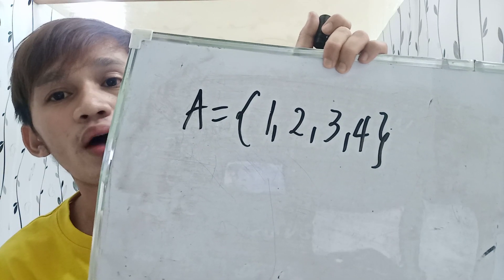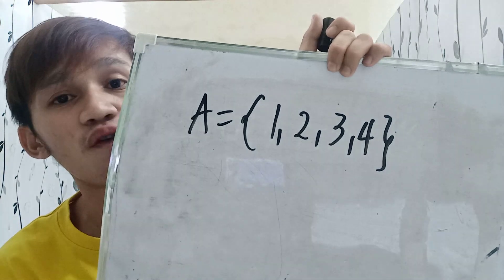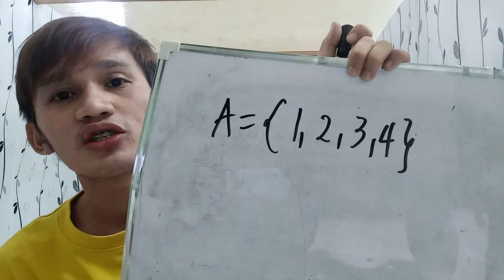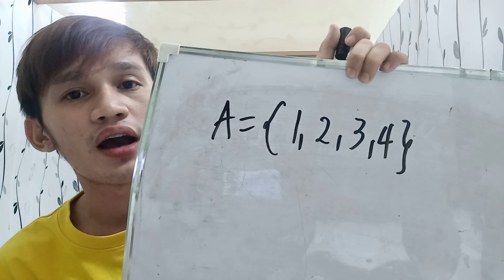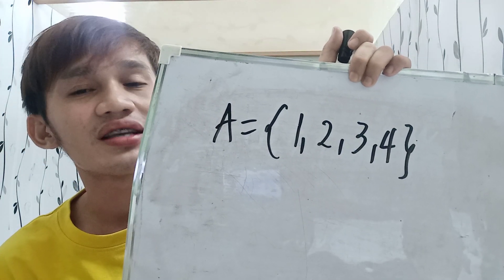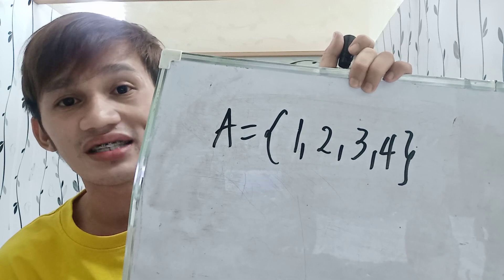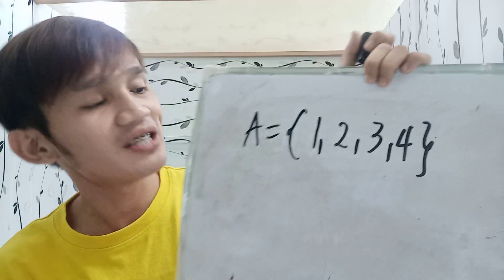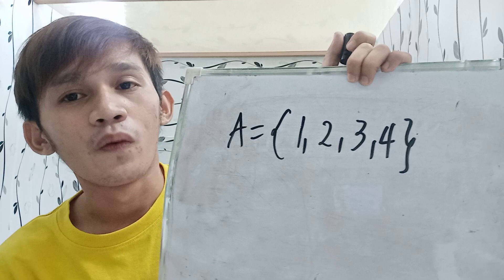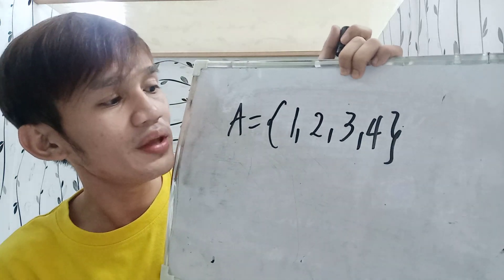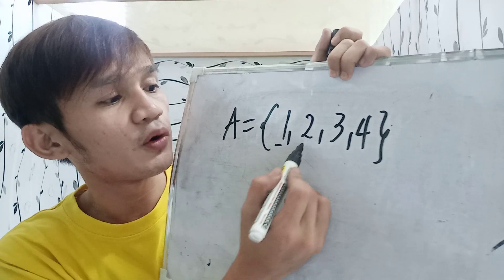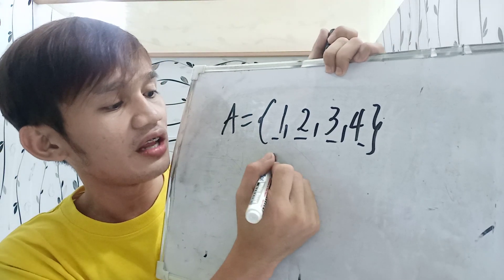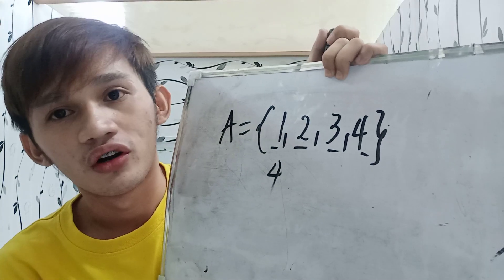SET A has elements 1, 2, 3, and 4. If you are asked to identify the cardinality of SET A, it is definitely 4. You are just going to count the number of elements in the SET. So the cardinality of SET A is 4.